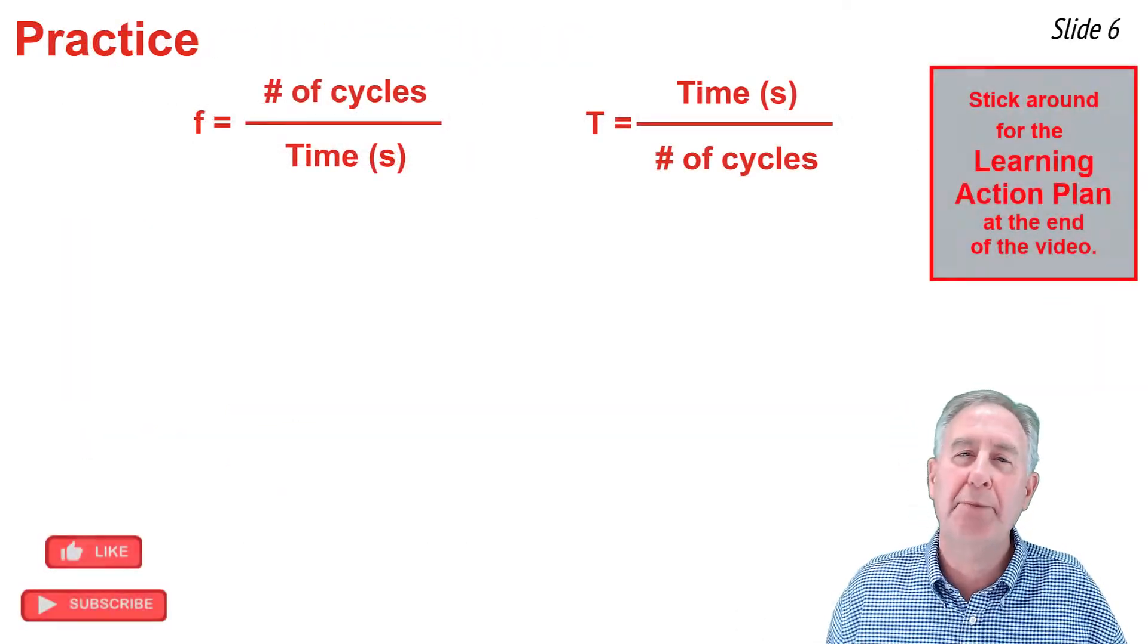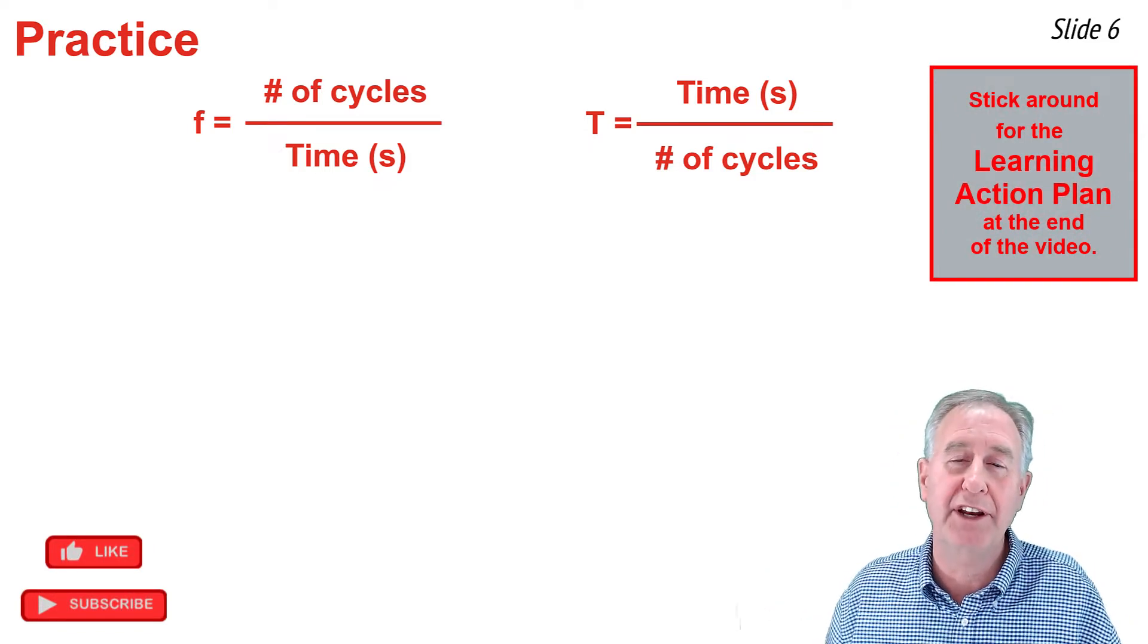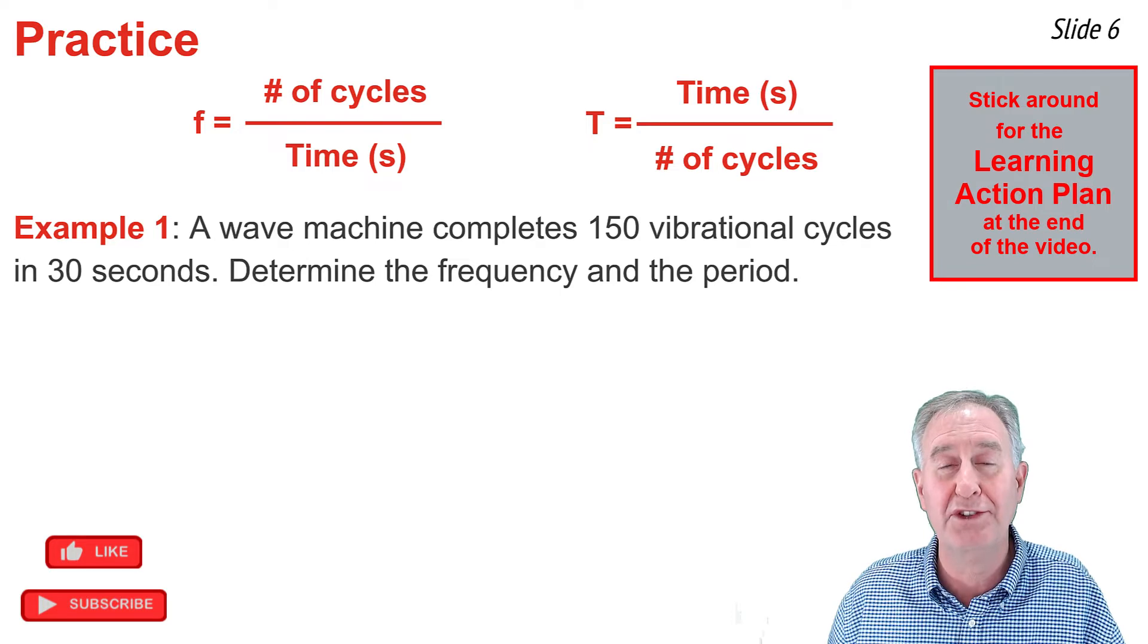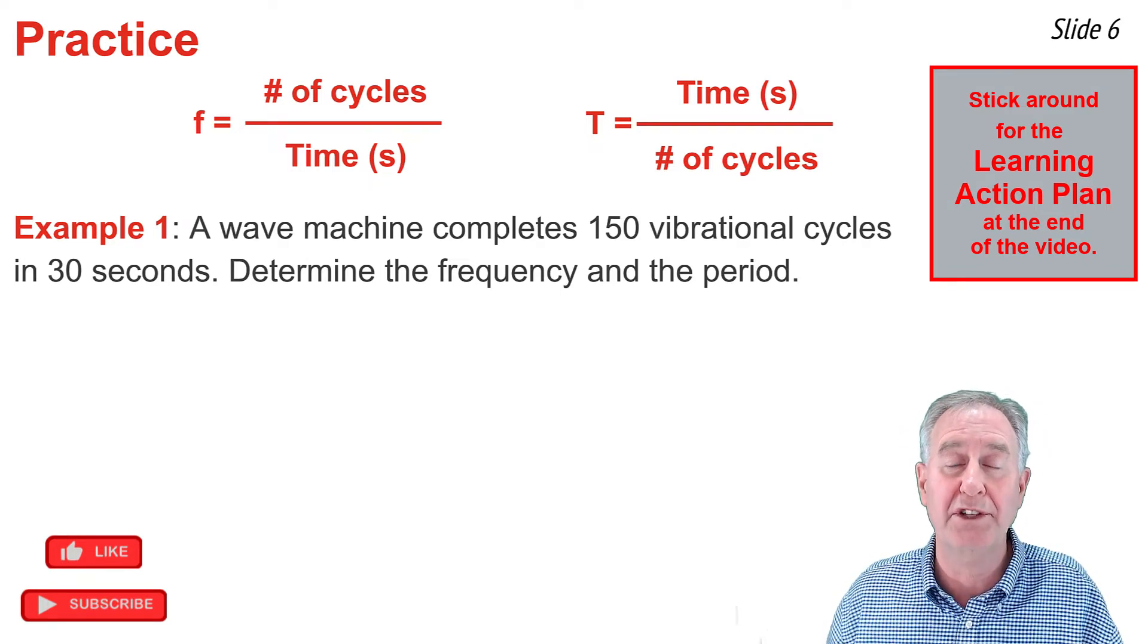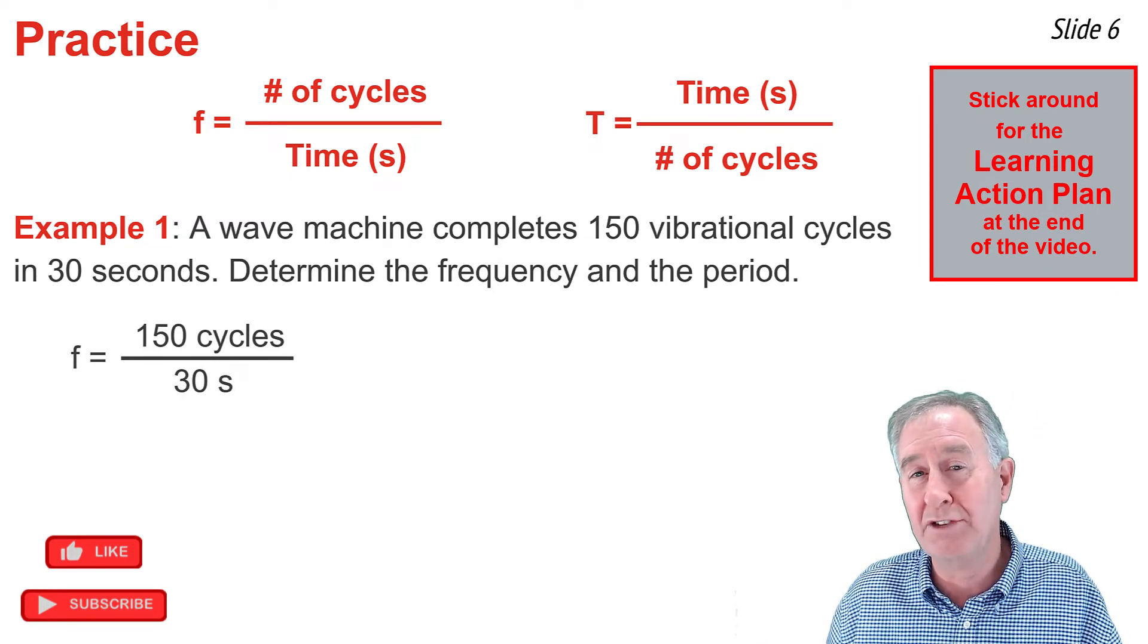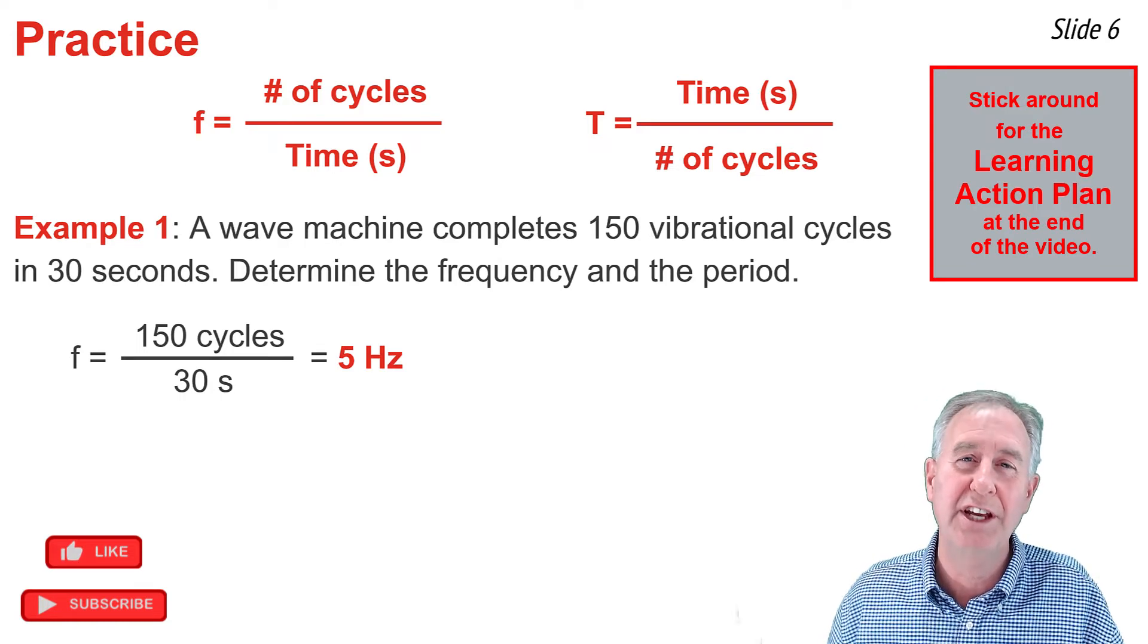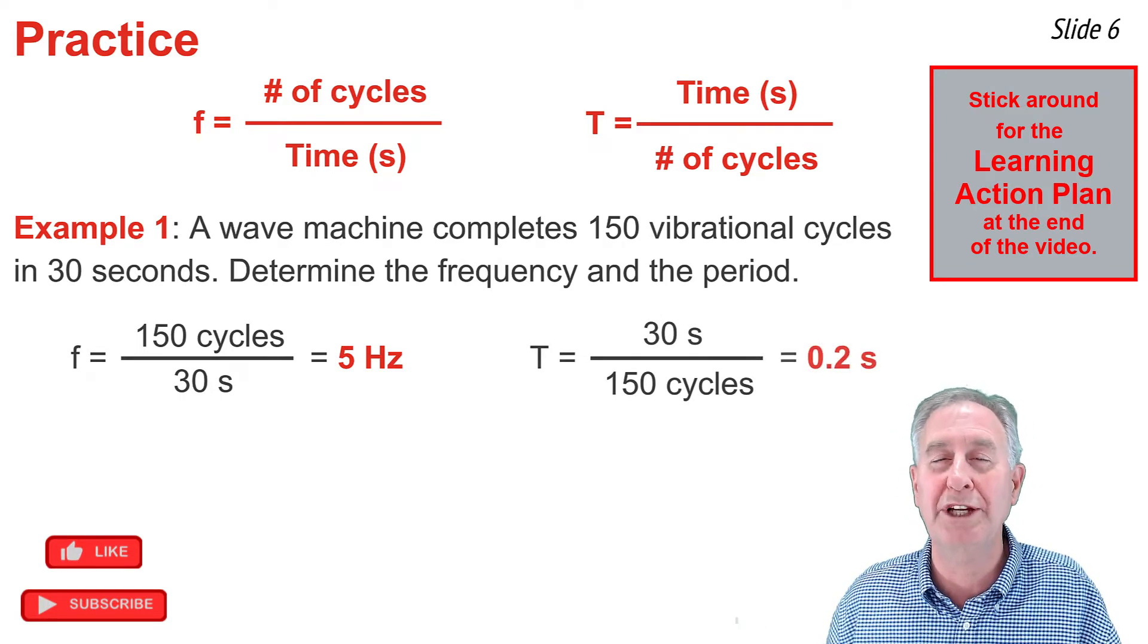Now I'd like to do two example problems of calculating frequency and period using our formulas for frequency and period. In the first example, a wave machine completes 150 vibrational cycles in 30 seconds to determine the frequency in the period. For the frequency, I'm going to take the number of cycles, 150, and divide it by the time of 30 seconds. When I do, I get 5 cycles per second, or 5 hertz. And for the period, I'm going to do the inverse. I'm going to take the time of 30 seconds and divide by 150 cycles. And when I do, I get 0.2 seconds.